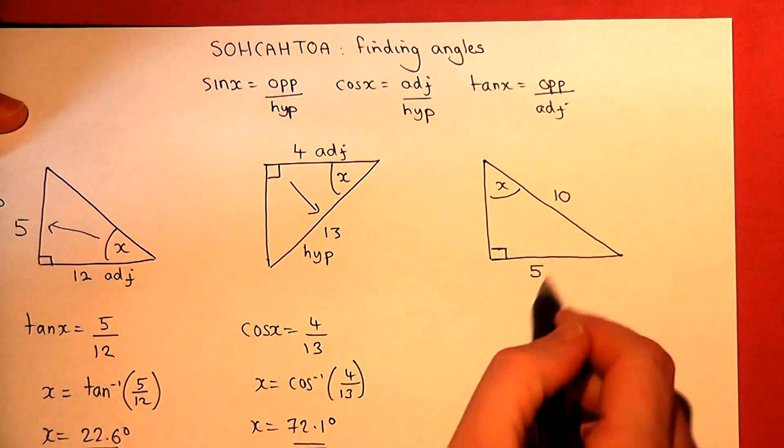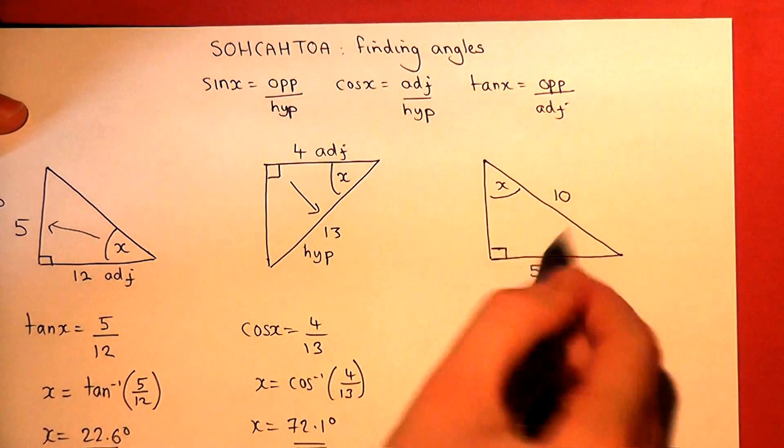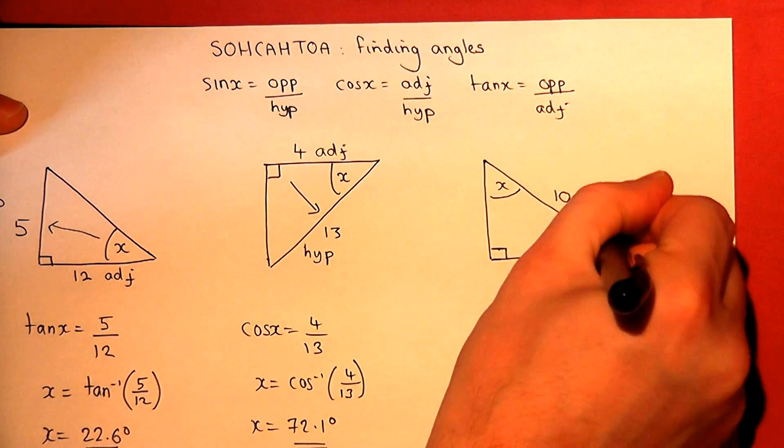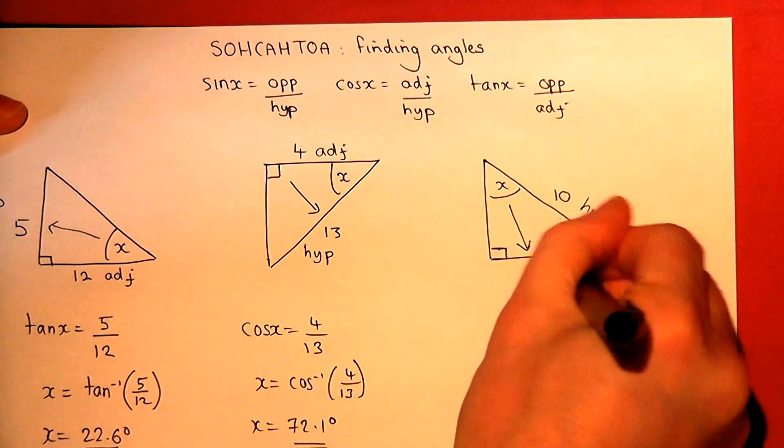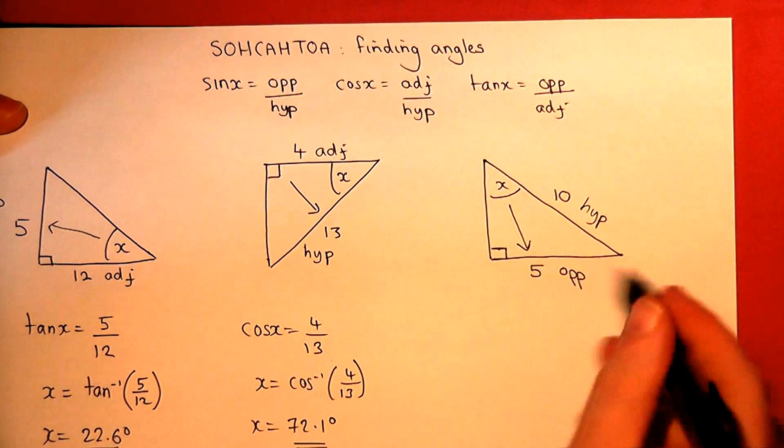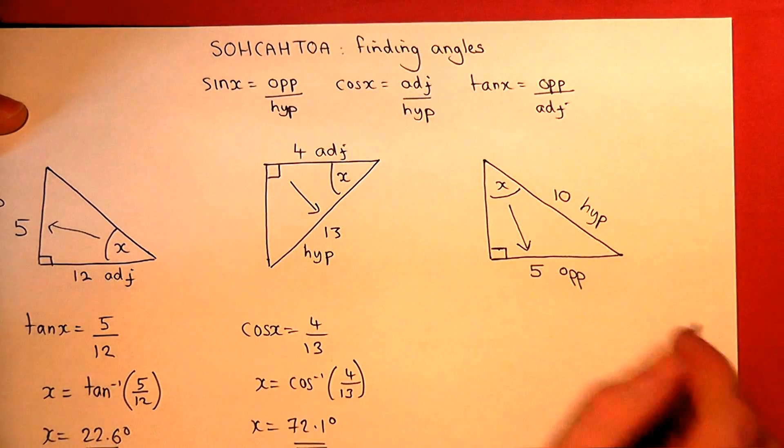So the final one. Here's our angle. Now that one there is the hypotenuse. And this side is opposite the angle. So that's the opposite. So opposite hypotenuse. It's the sine equation.